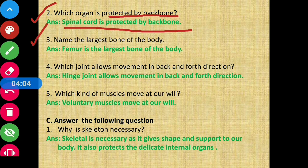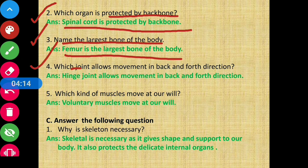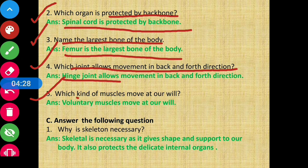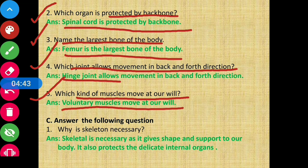Question number 3: name the largest bone of the body — femur is the largest bone of the body. Question number 4: which joint allows movement in back and forth direction? Hinge joint allows movement in back and forth direction. Question number 5/6: which kind of muscles move at our will? Voluntary muscles move at our will.